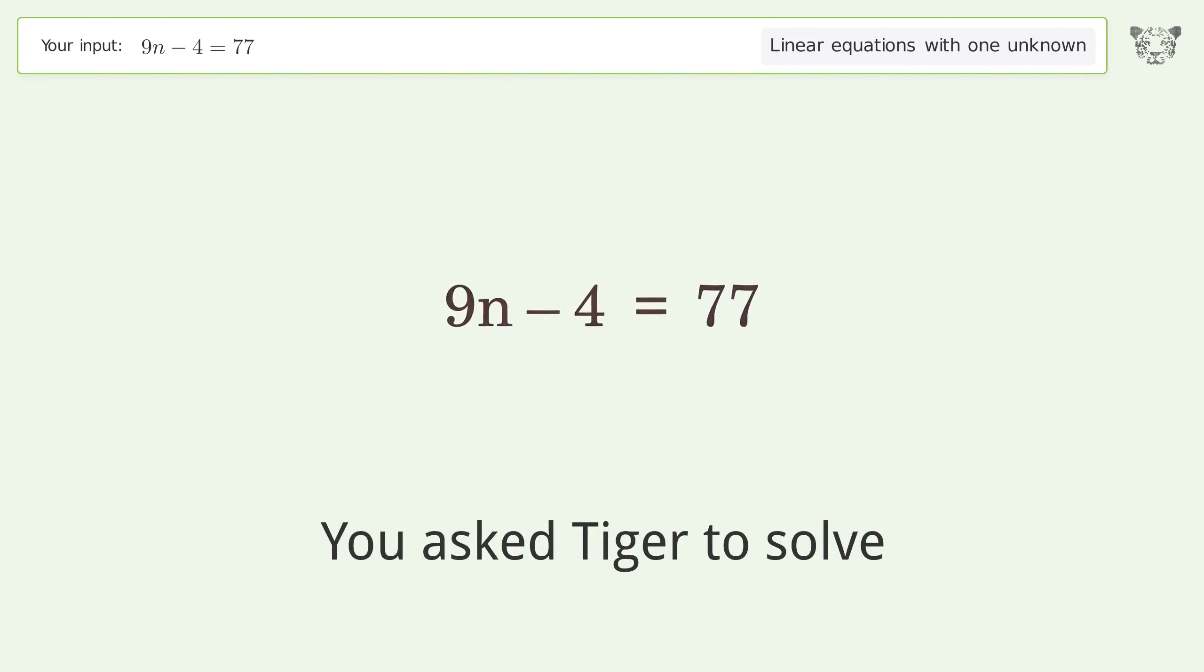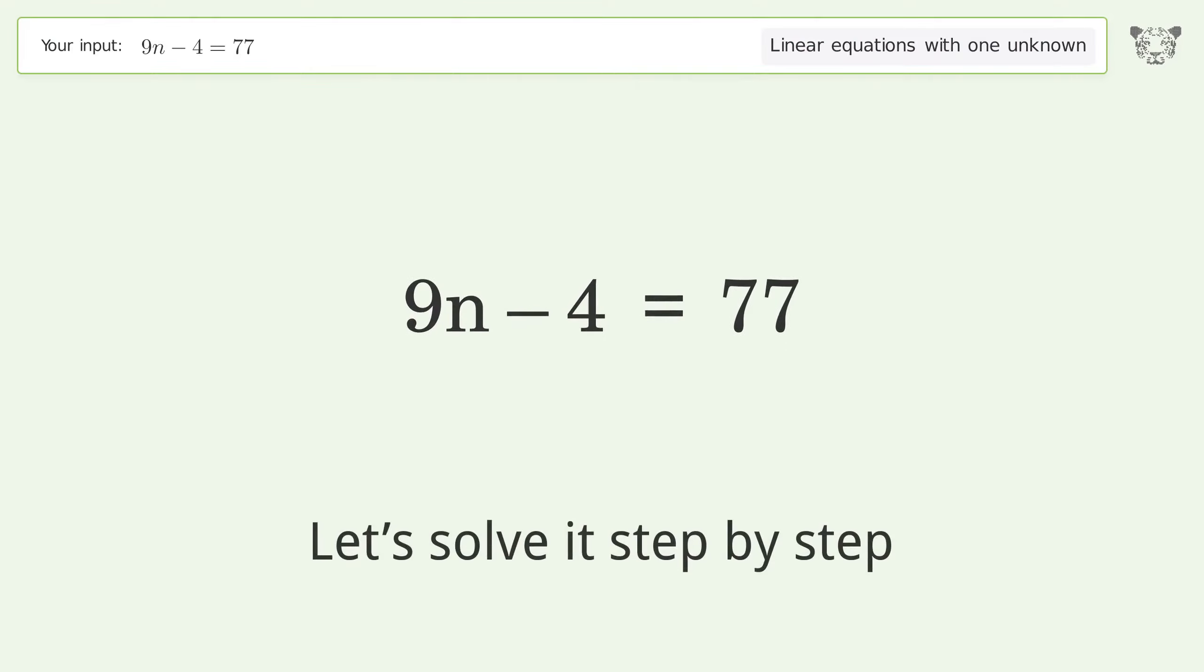You asked Tiger to solve. This deals with linear equations with one unknown. The final result is n equals 9. Let's solve it step by step.